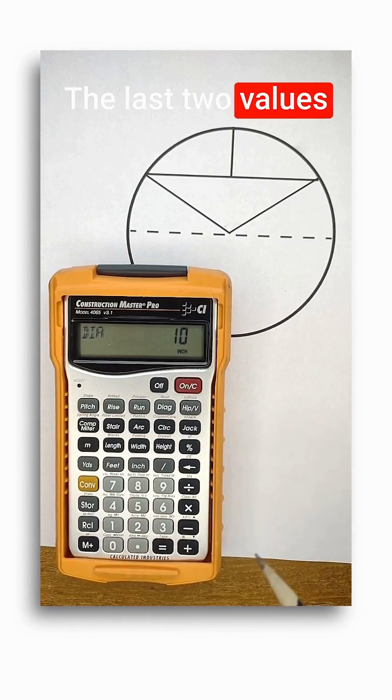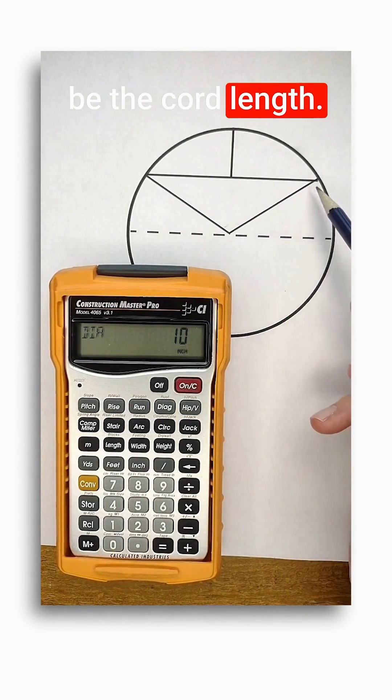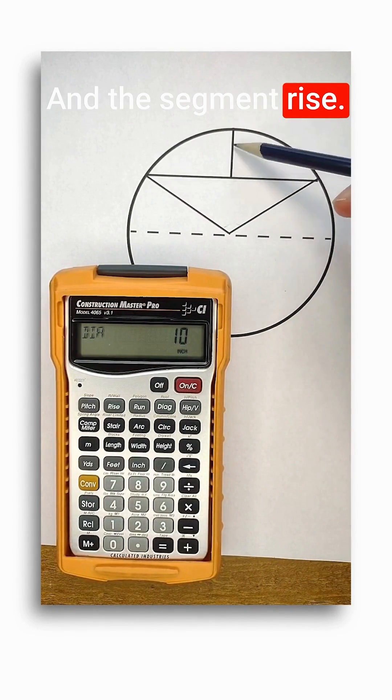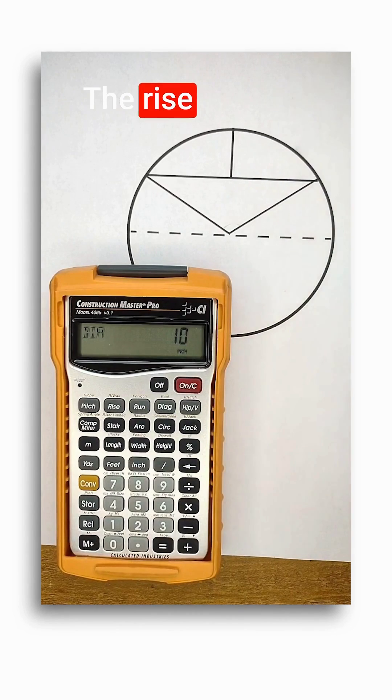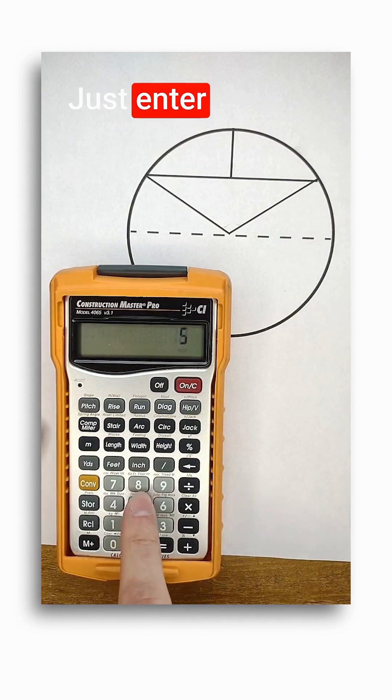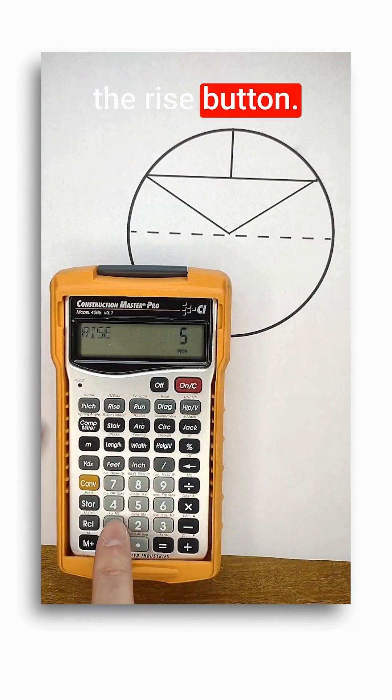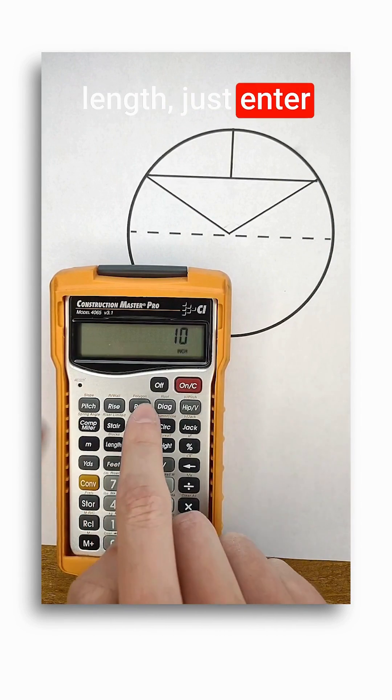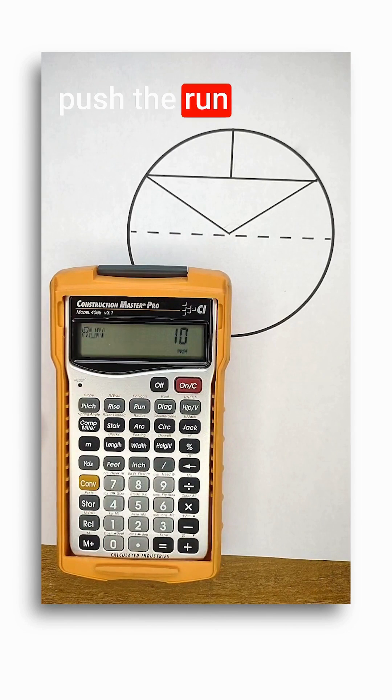The last two values I could enter would be the chord length and the segment rise. The rise is super easy to enter. Just enter a length and then push the rise button. And then for the chord length, just enter another length and push the run button.